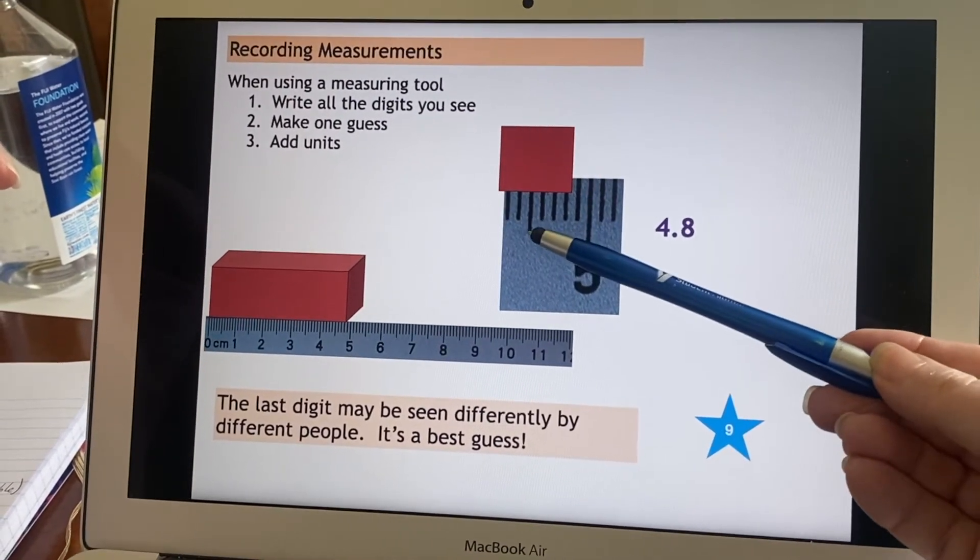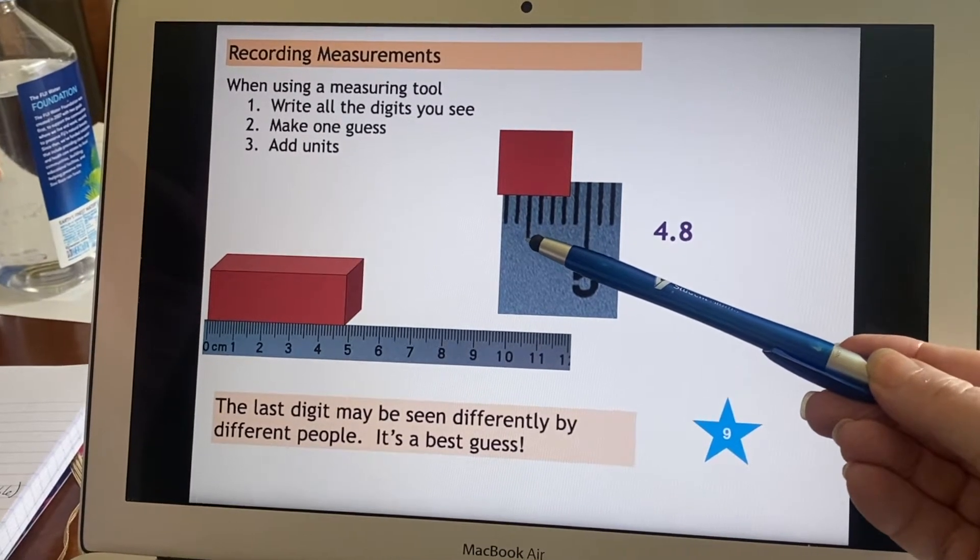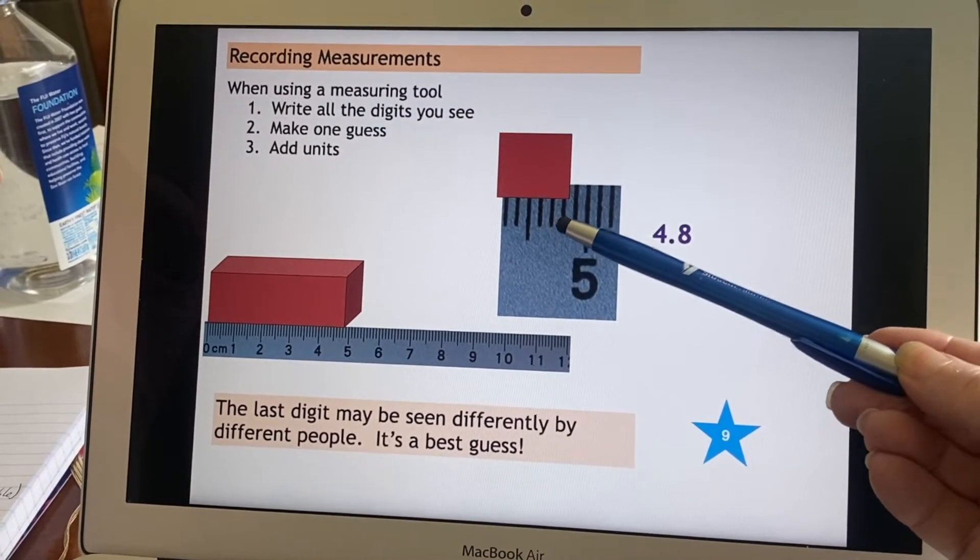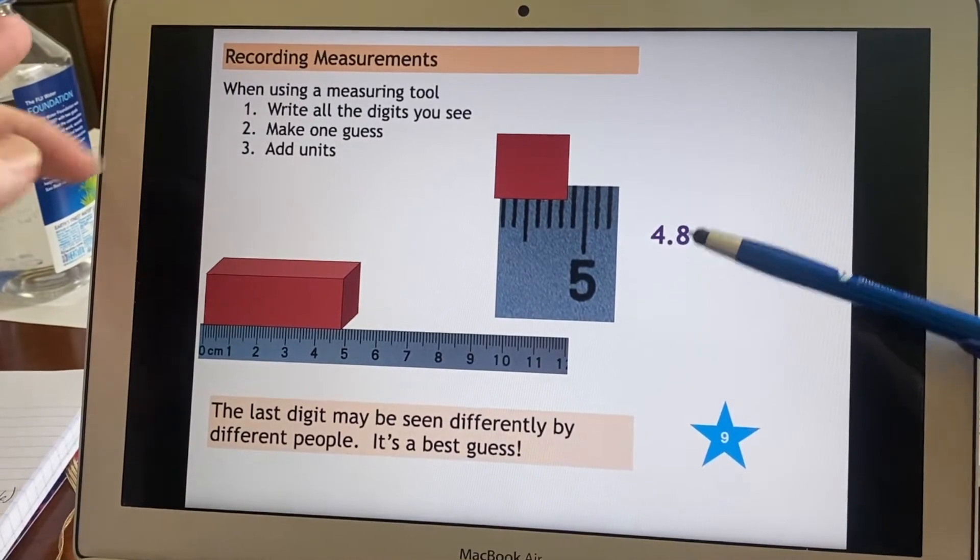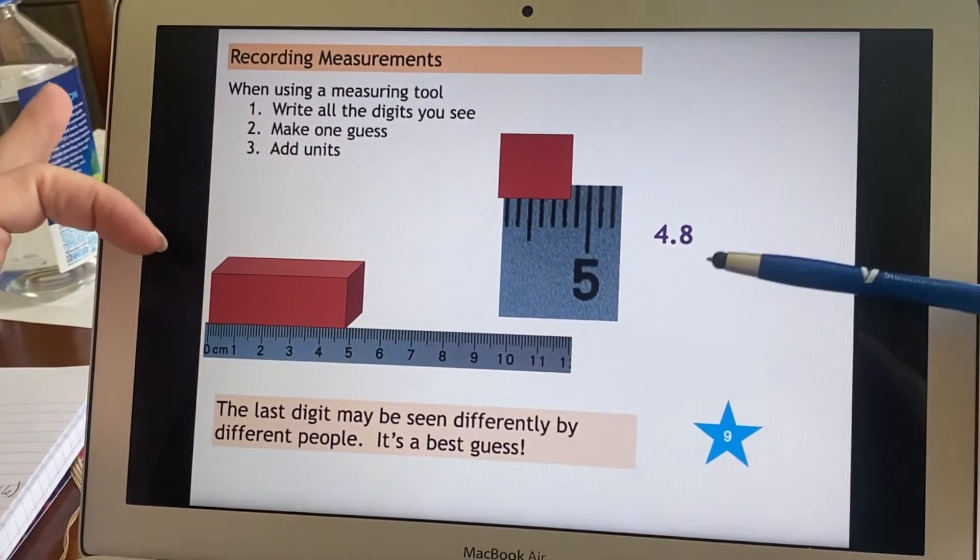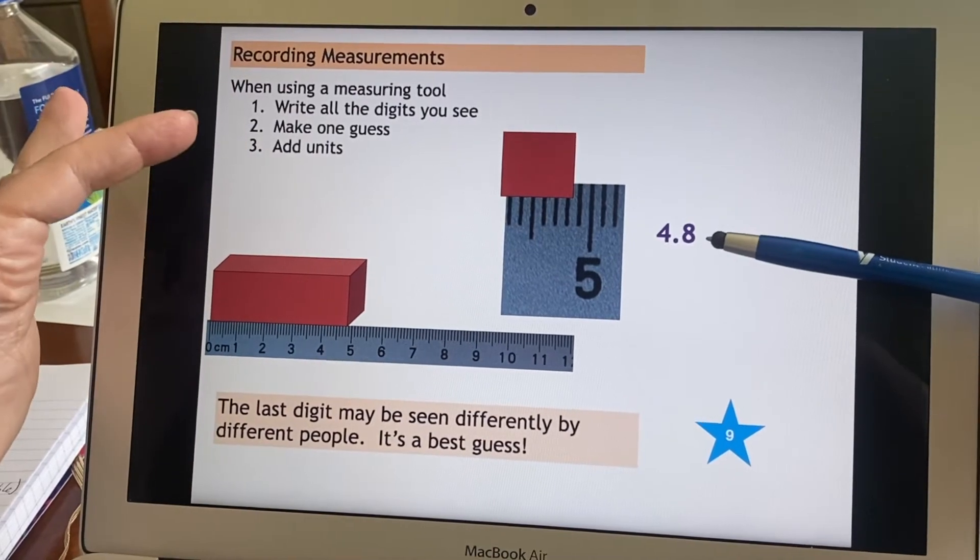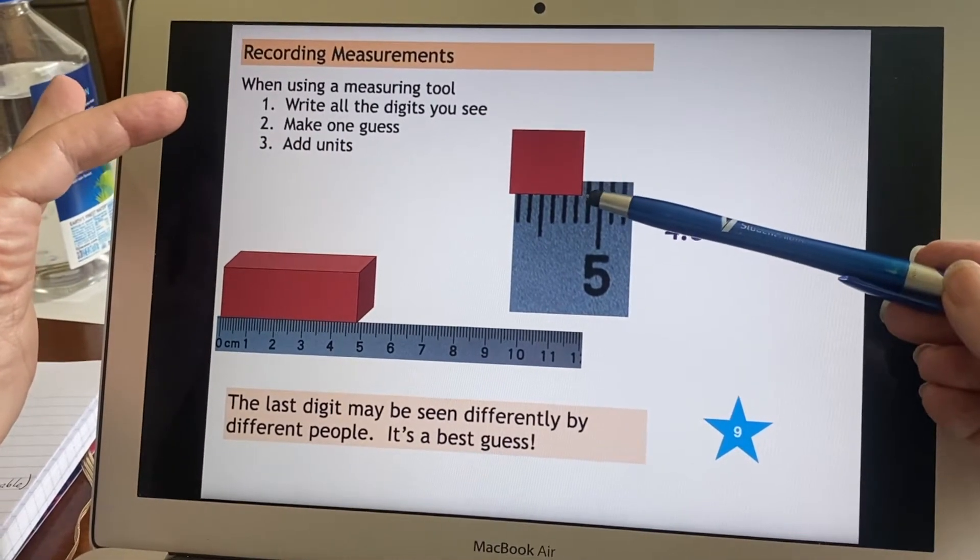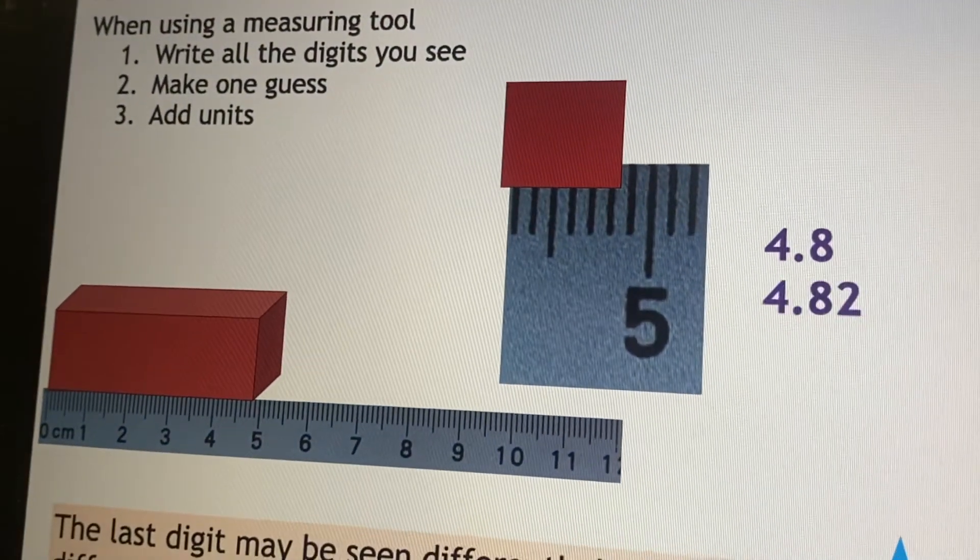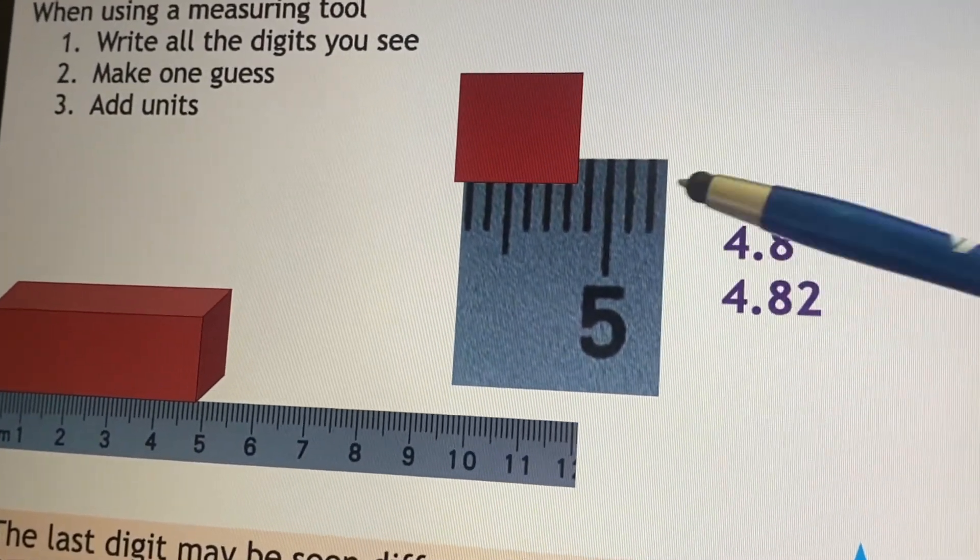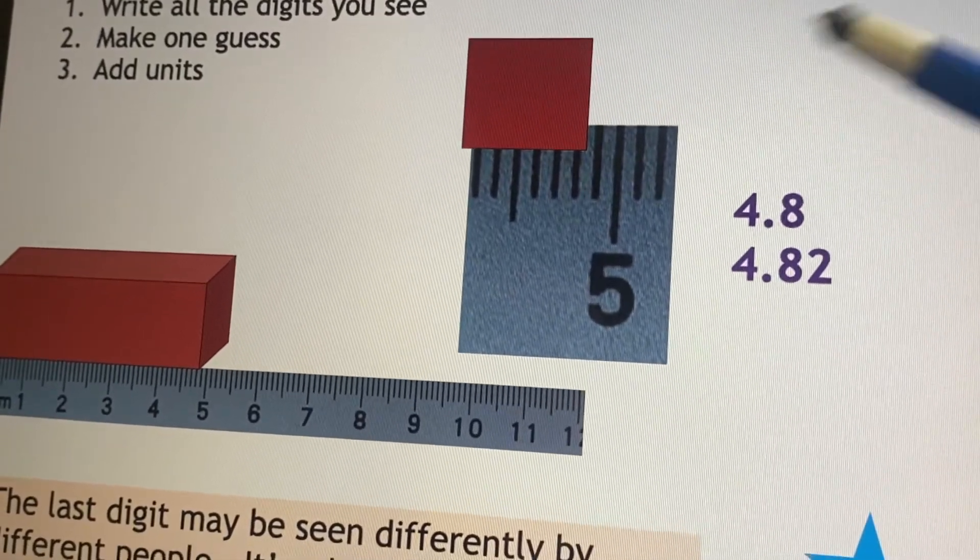Then they get closer. They bring their face closer to this to try to figure out the ones that are still marked, but not labeled. And they say, oh, here's the midway point. That would be 0.5, 0.6, 0.7, 0.8. So they see it's past 0.8. So they put the 0.8. So that is writing all the digits that you see. Then you make one guess. So you look at that and you say, well, how far did it go to the next marking? This person decided two.